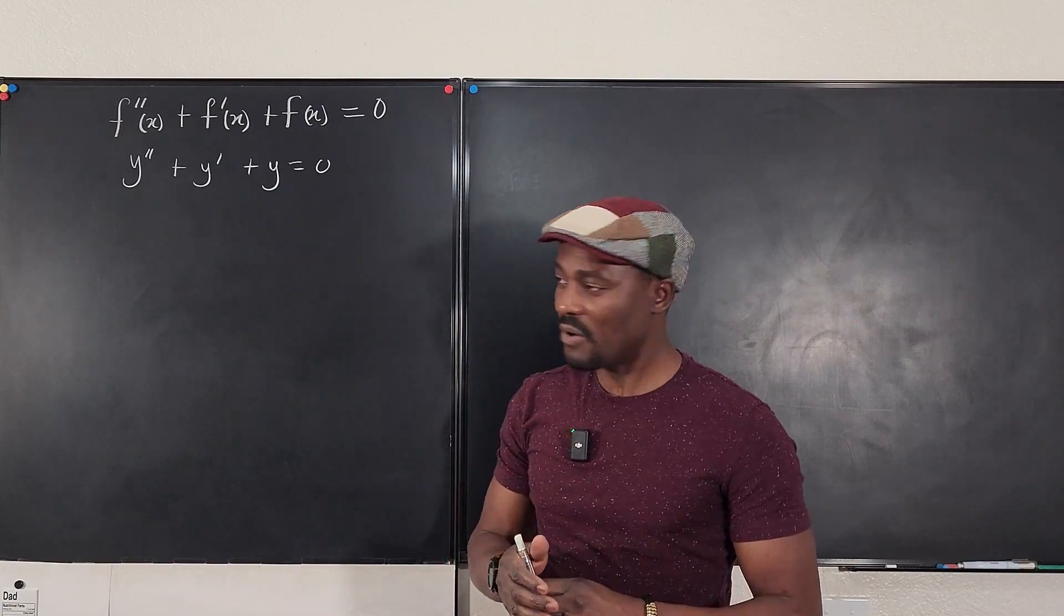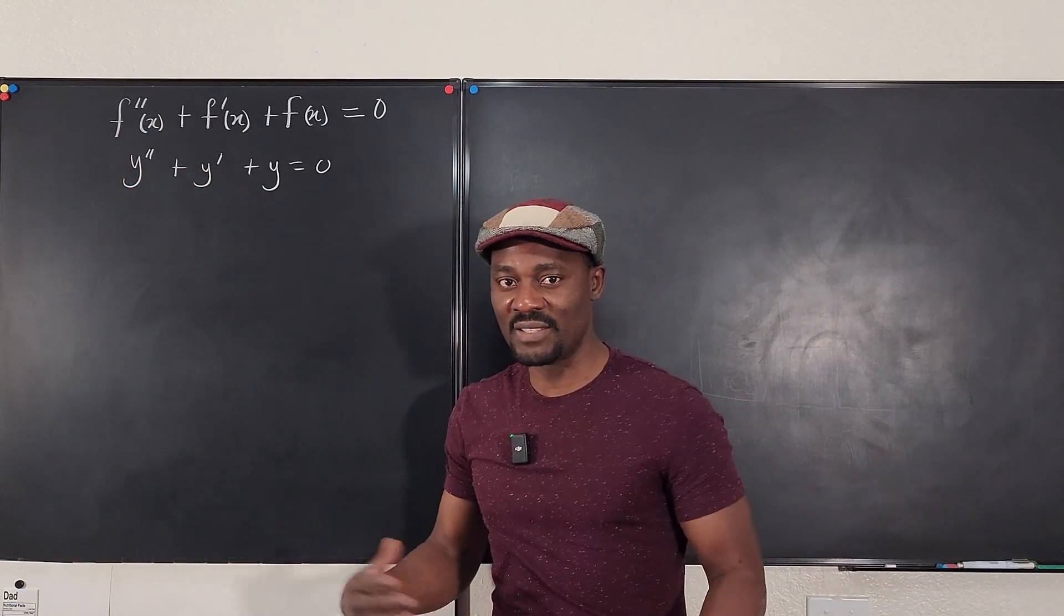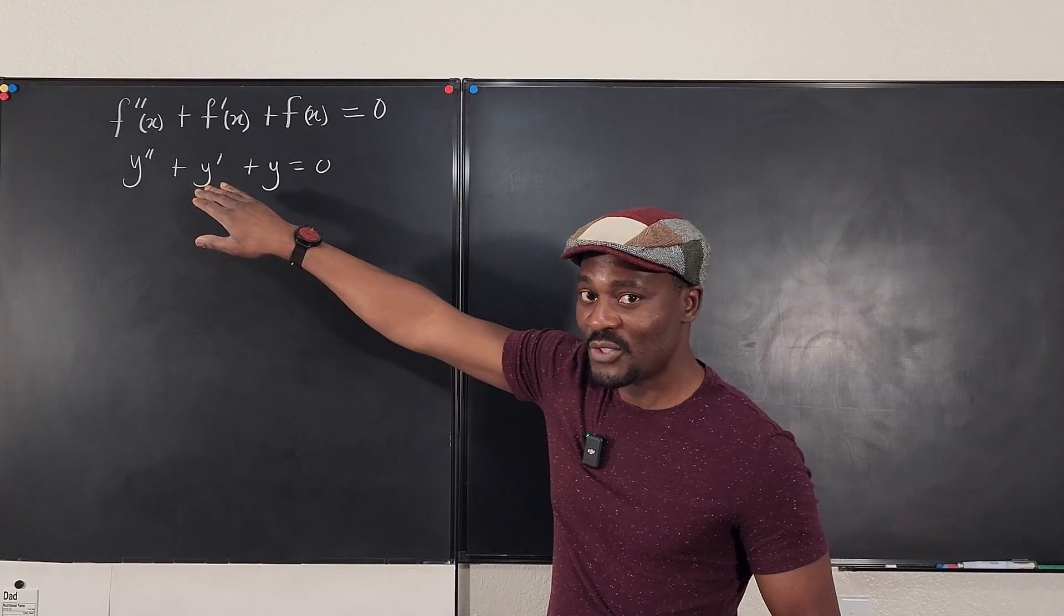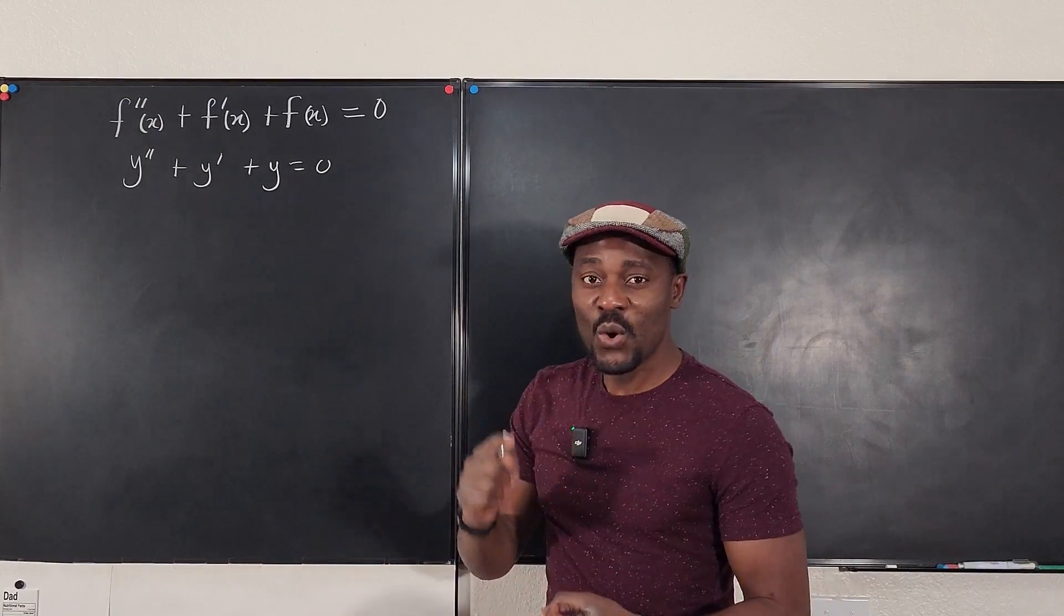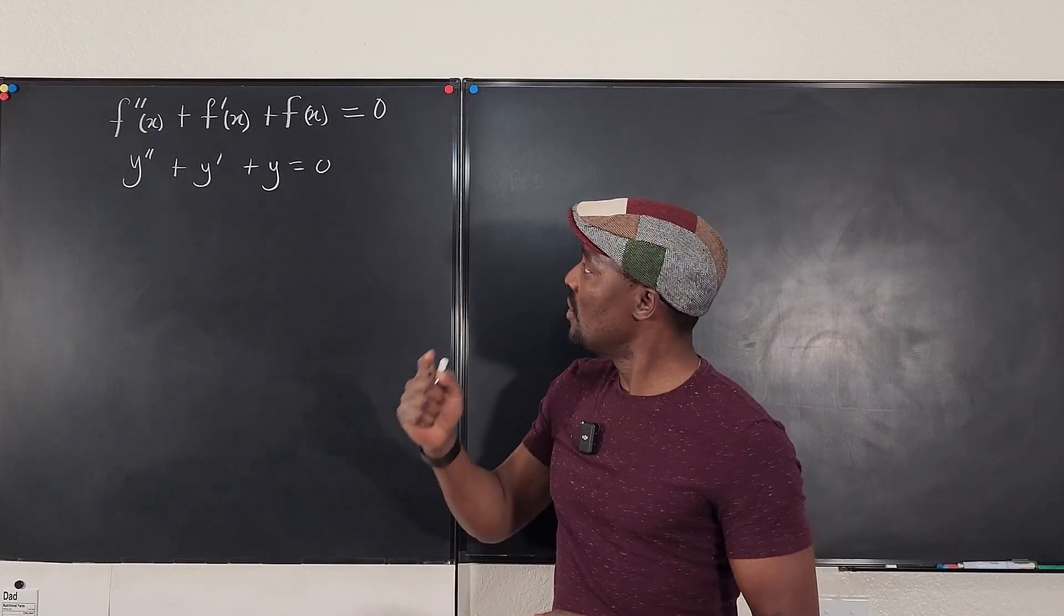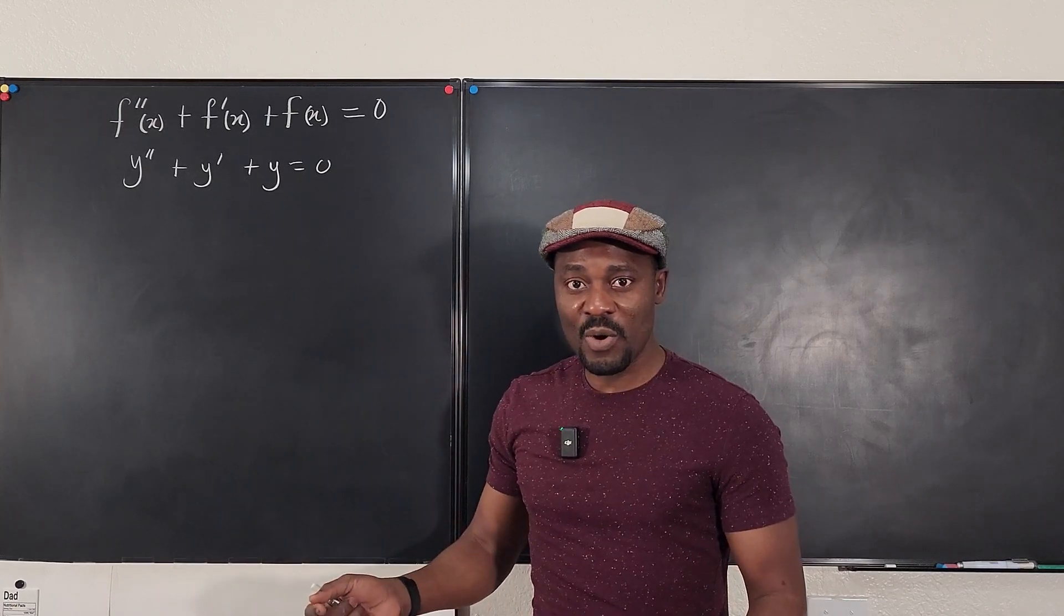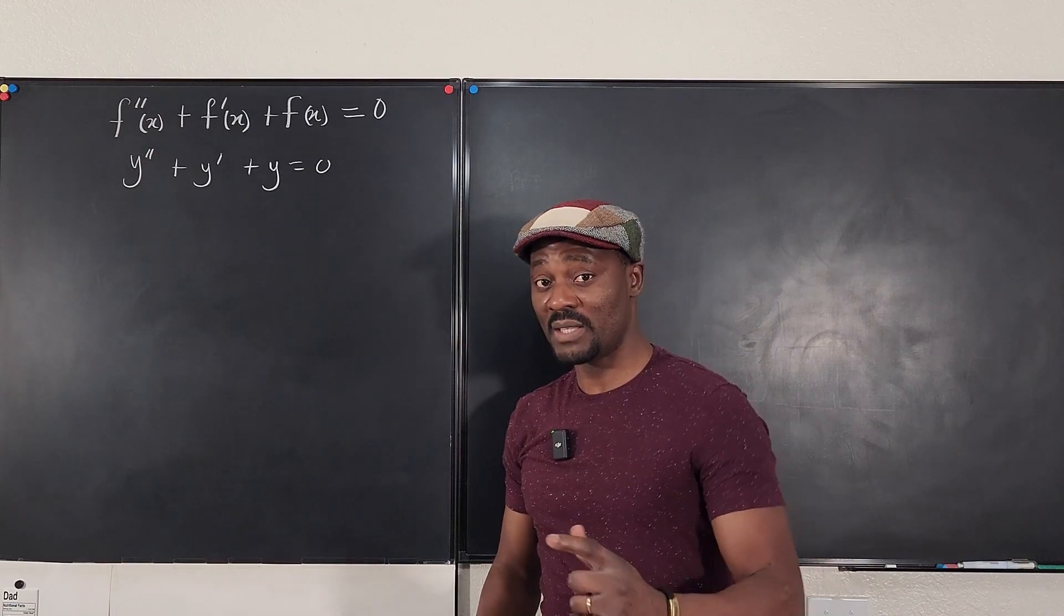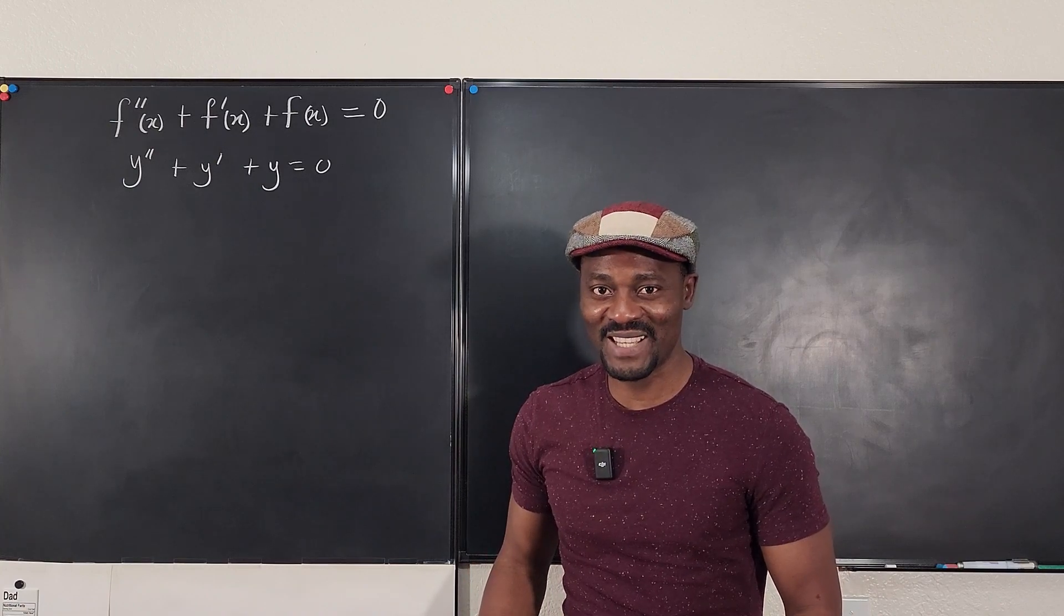What else do we know about it? The coefficients of these terms are all constants. There is no x, there is no y, there's nothing. So you notice that they're all constants. We can describe this as a second-order linear homogeneous differential equation with constant coefficients. And remember, I said it's autonomous in the first place because there is no x.